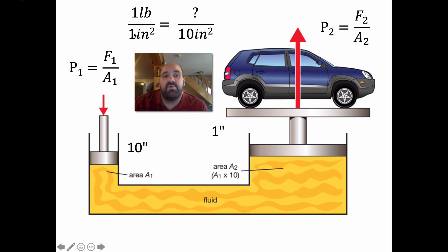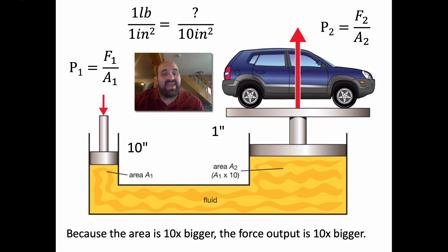And what that shows is that an input force of 1 yields an output force of 10. You are gaining a mechanical advantage because the area of the output area is 10 times bigger than the input area. You are gaining 10 times the amount of output force. So we can use a small force to lift a very heavy object.